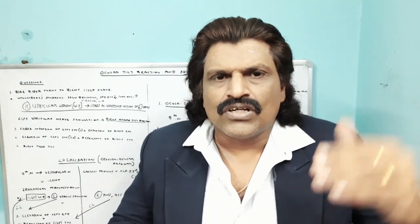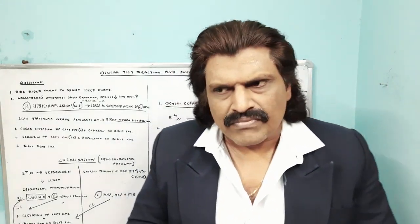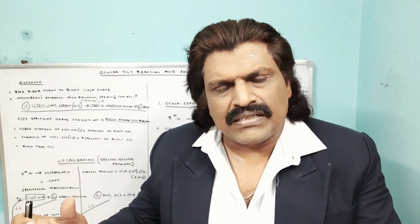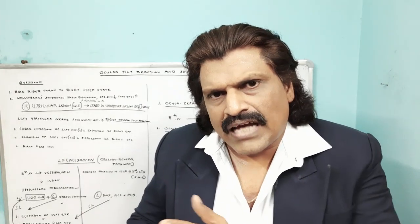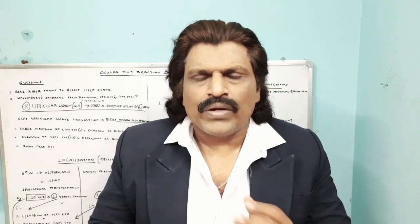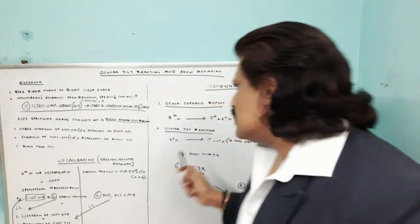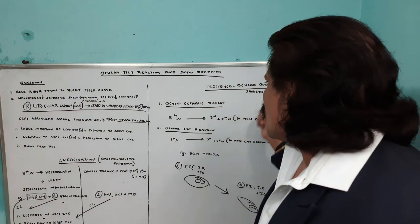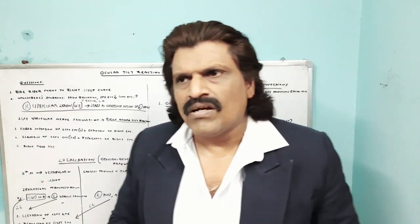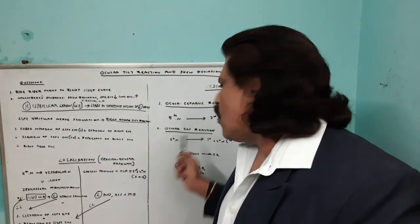When there is vertical misalignment — one eye going upwards, the other going downwards — you call that skew deviation. Basically, we have these vestibular ocular connections: when there is head movement, to steady the image on the fovea, the eye moves in the opposite direction with equal magnitude. To understand these vestibular ocular connections, we need to understand two basic reflexes: one is the oculovestibular reflex (the doll's head movement), and the second is the ocular tilt reaction.